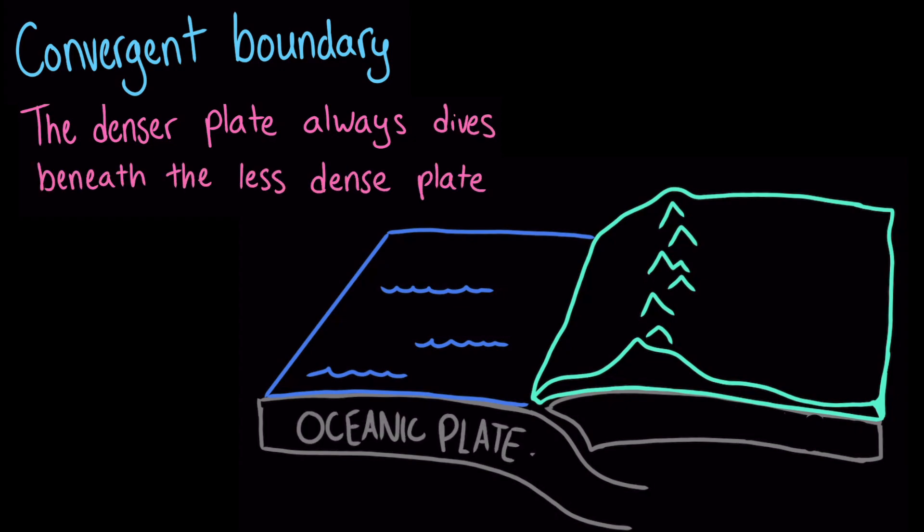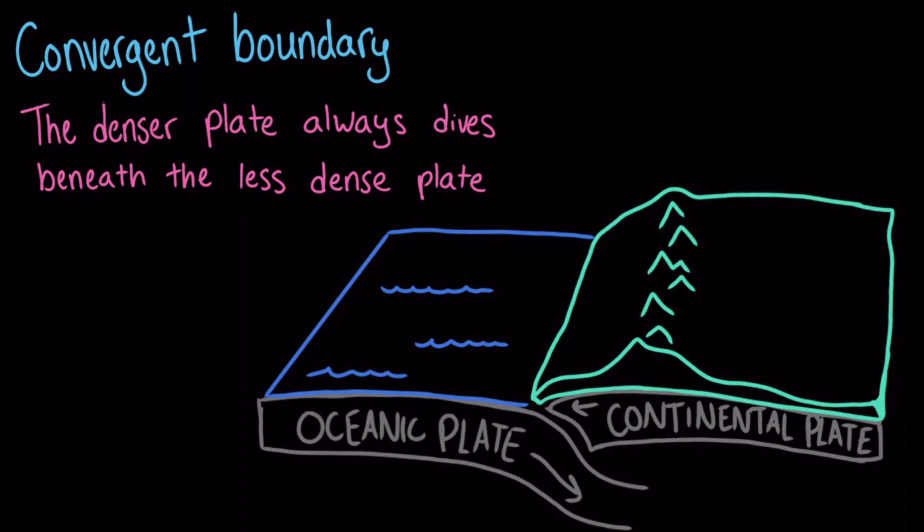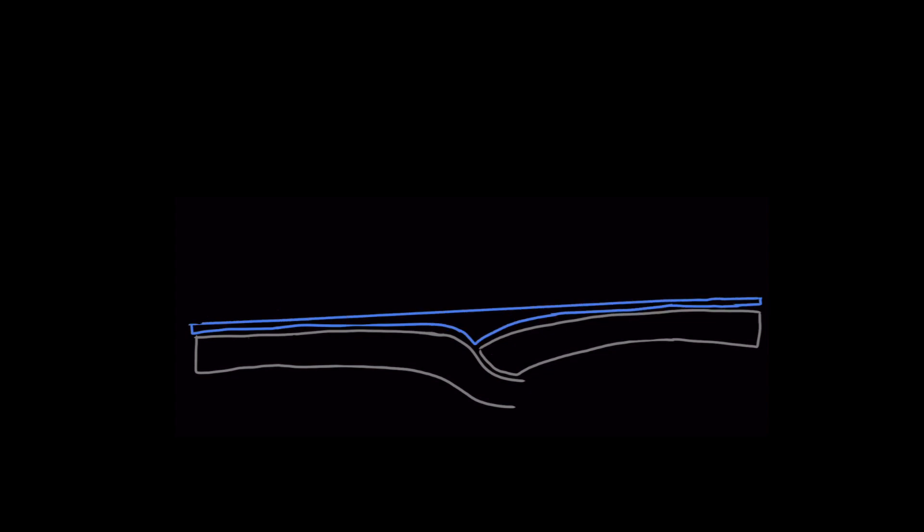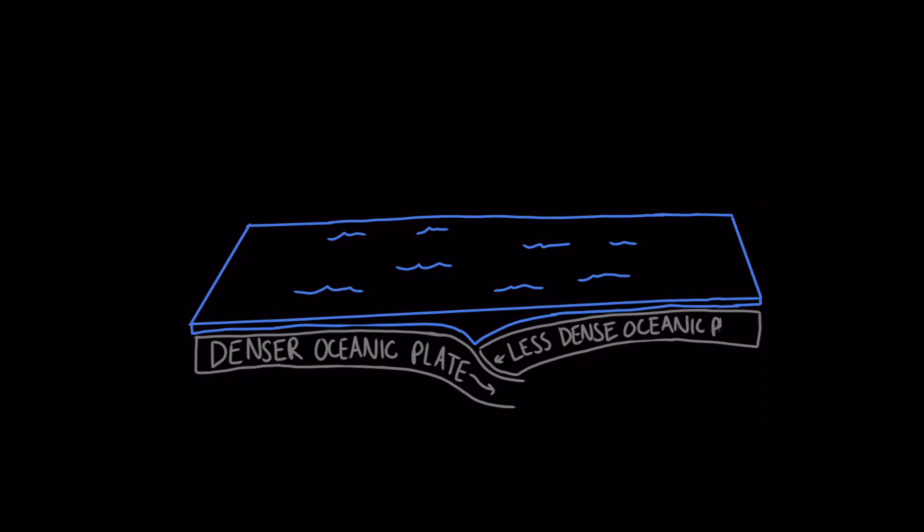When it's an oceanic plate and a continental plate converging, the denser oceanic plate is the one that dips down. And when it's two oceanic plates that are colliding, the older, denser oceanic plate will move under the newer and less dense oceanic plate. Over time, the denser plate will be recycled into the asthenosphere. The place where the plates collide is called a subduction zone. This bending of the denser plate under the other creates a trench.